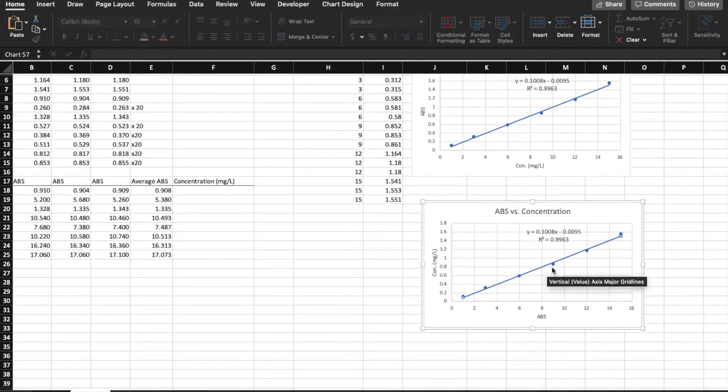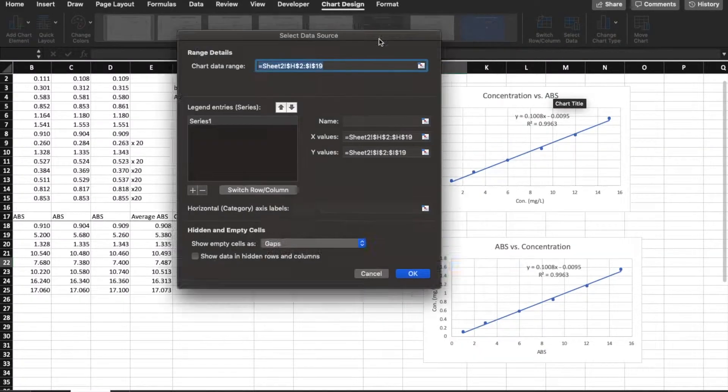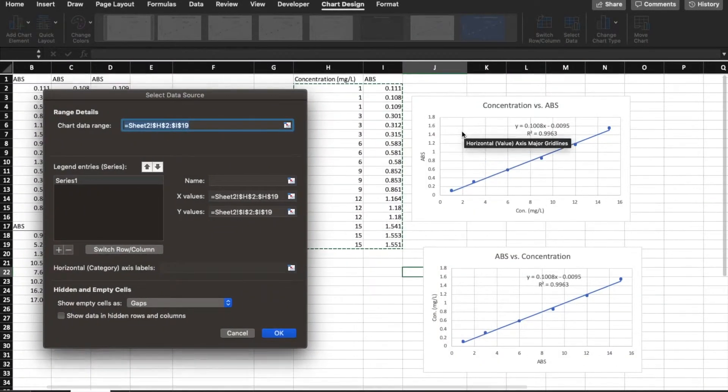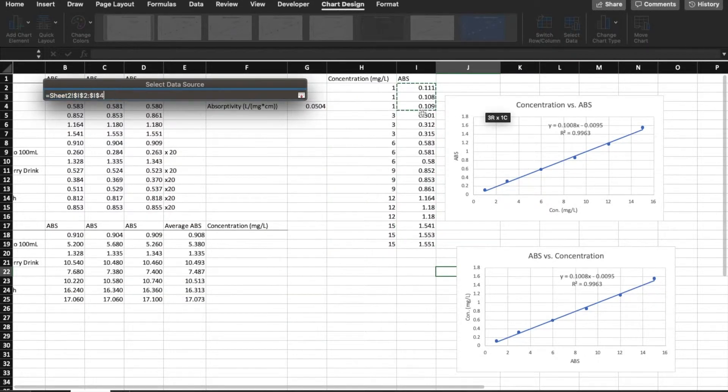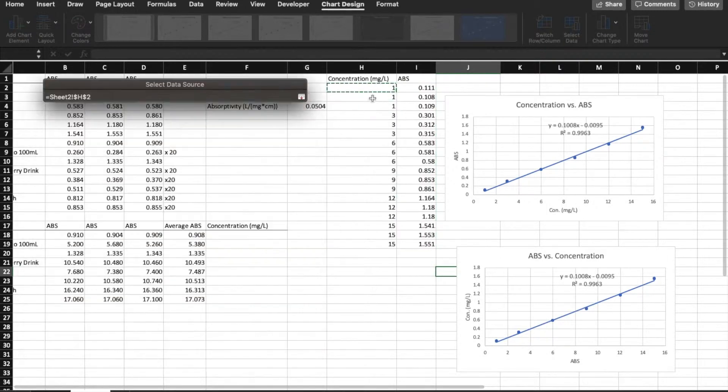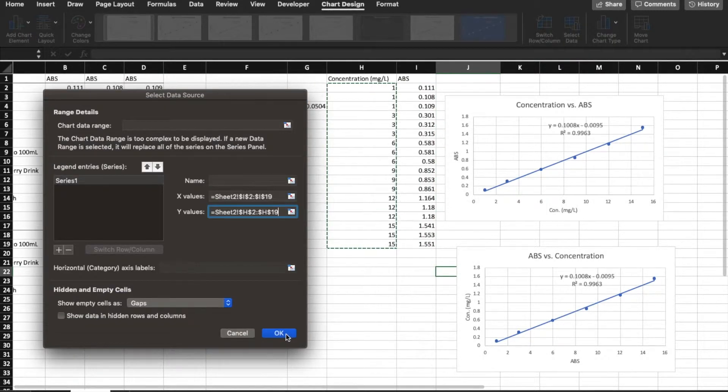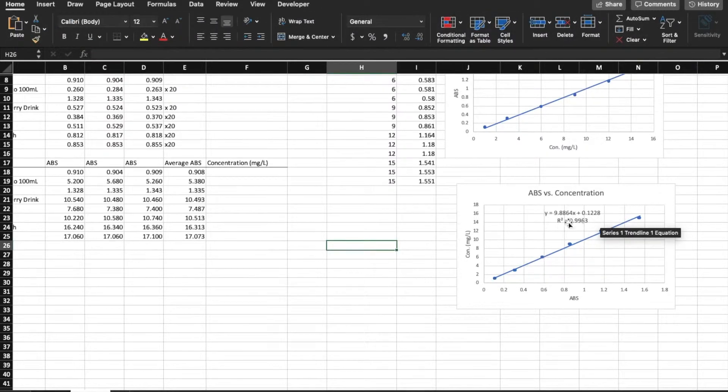So all I'm going to do is, when I click on this data, I can go to the top to chart design and I can click on select data. And I can actually switch my x and y axis. So for my x values, I'm going to choose my absorption. And then for the y values, I'm going to choose concentration instead. So then this will pretty much just flip the graph. It will give us a different equation. And now we're going to use this equation to find concentration. So this equation, if you plug in absorption for x, you'd get a y answer of concentration.